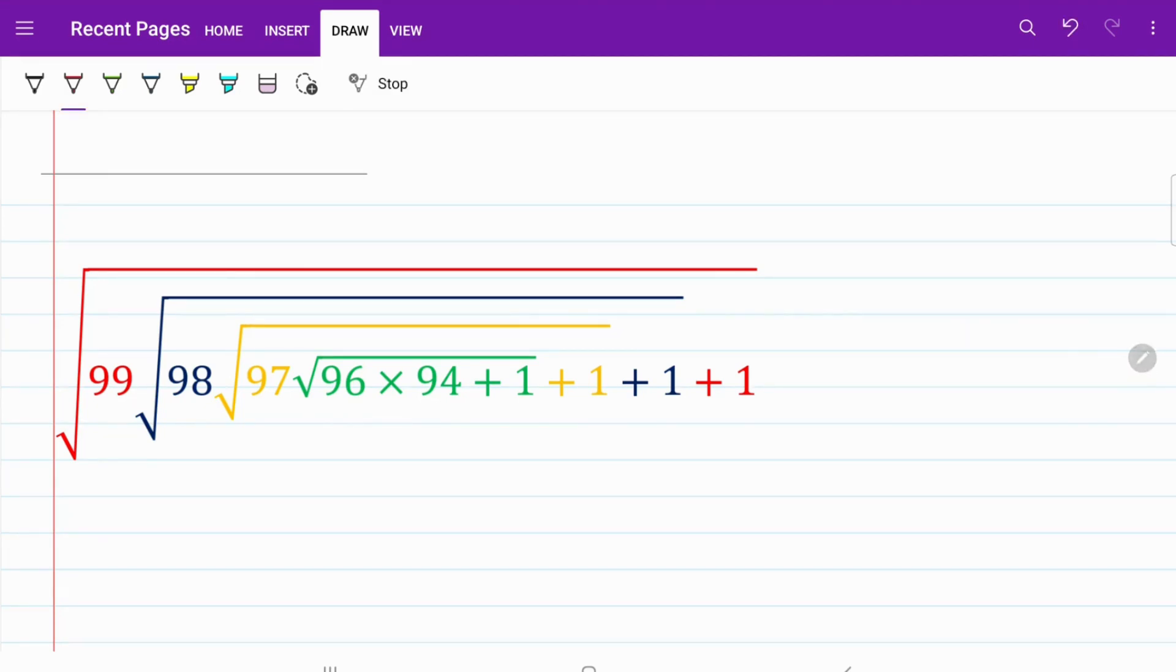Within this question, we have a series of numbers starting from 99 going down to 98, 97, 96, 94, and 4 ones at the back. These numbers are contained within a series of 4 square roots. In order to discuss the question properly and for easier reference, I decided to use color to mark each of the square roots.